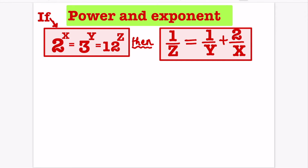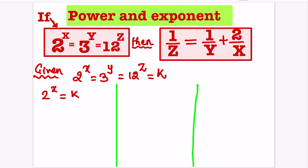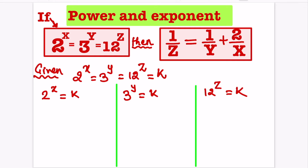Let us quickly solve the equation. Given 2 power x is equal to 3 power y equal to 12 power z, let us substitute this as k. So, 2 power x can be equated to k. Similarly, we can write 3 power y is equal to k and 12 power z is equal to k.